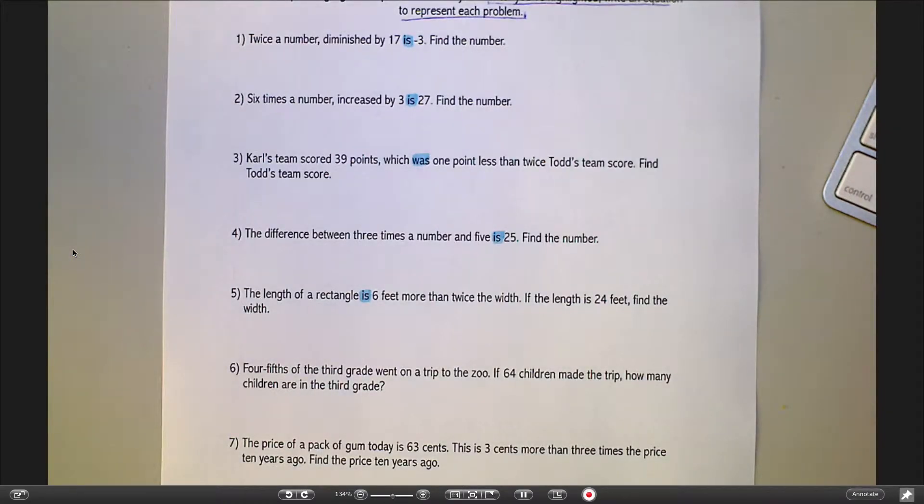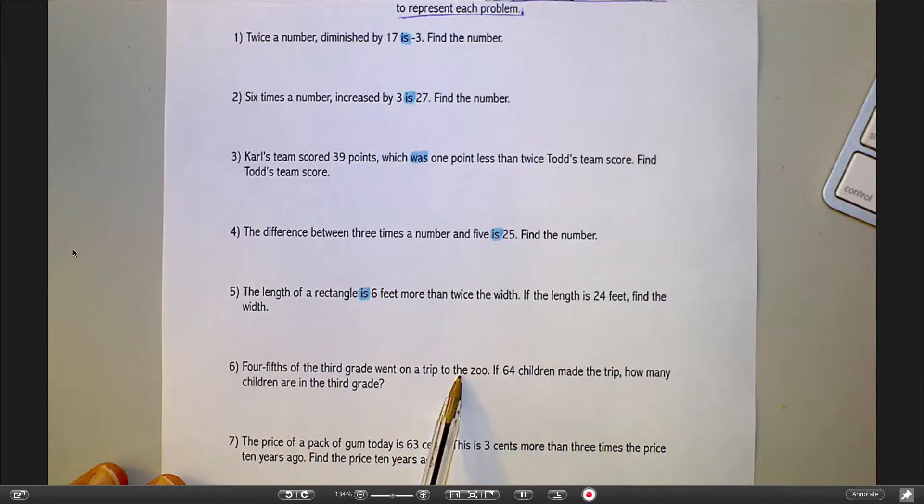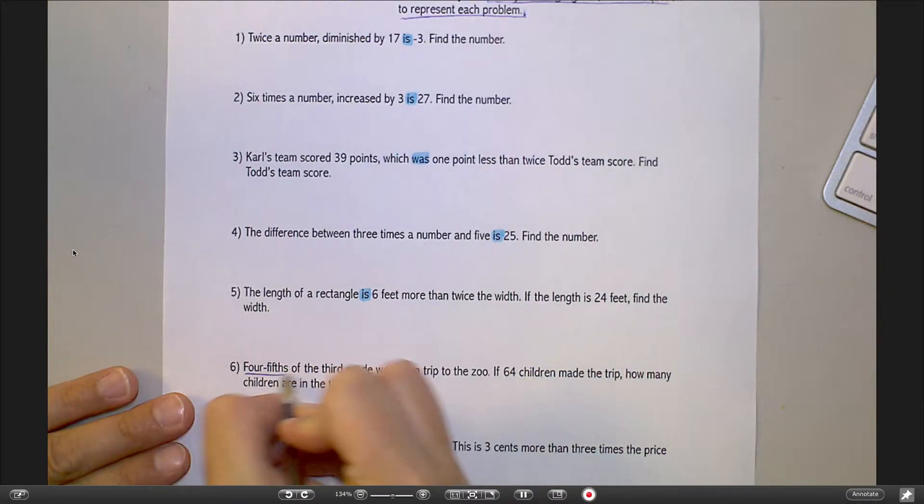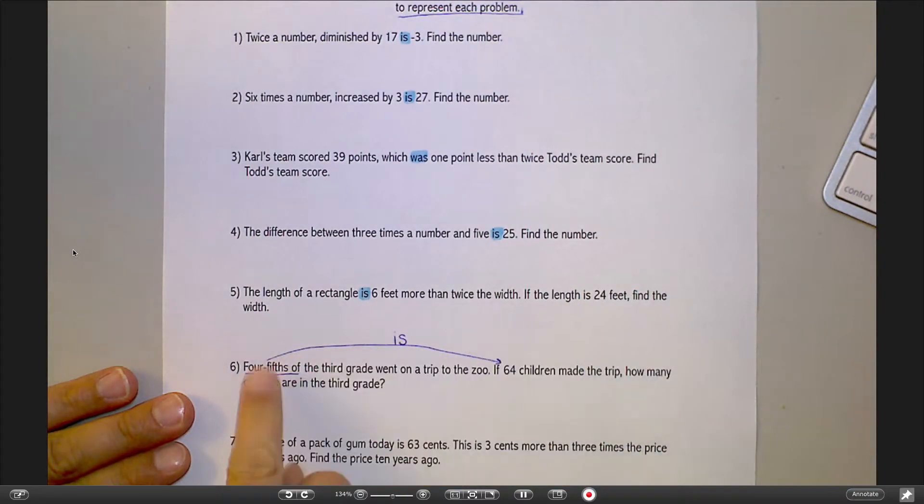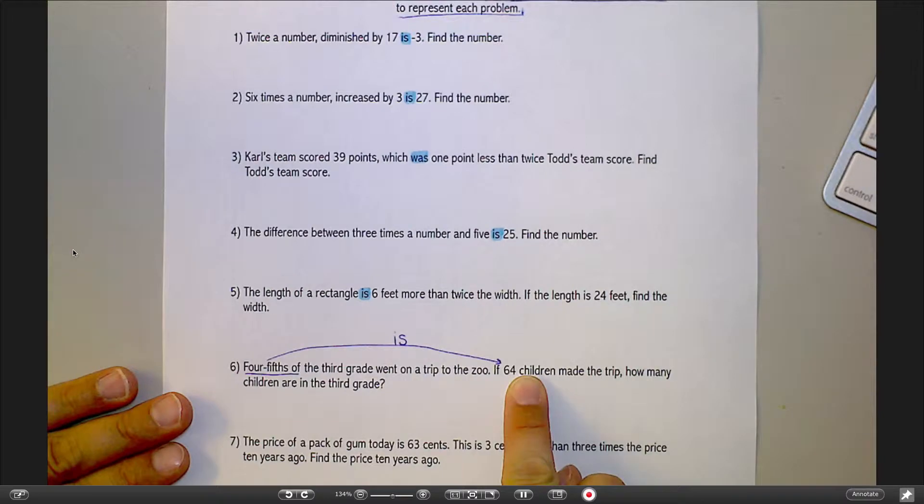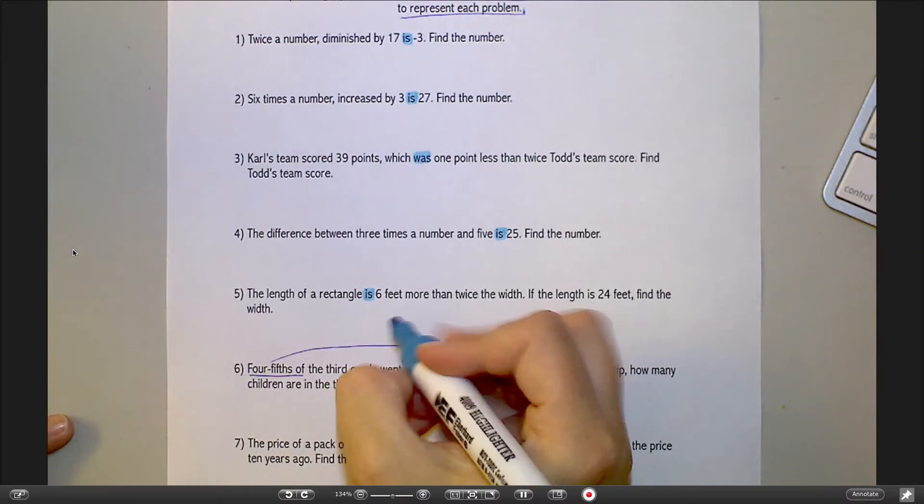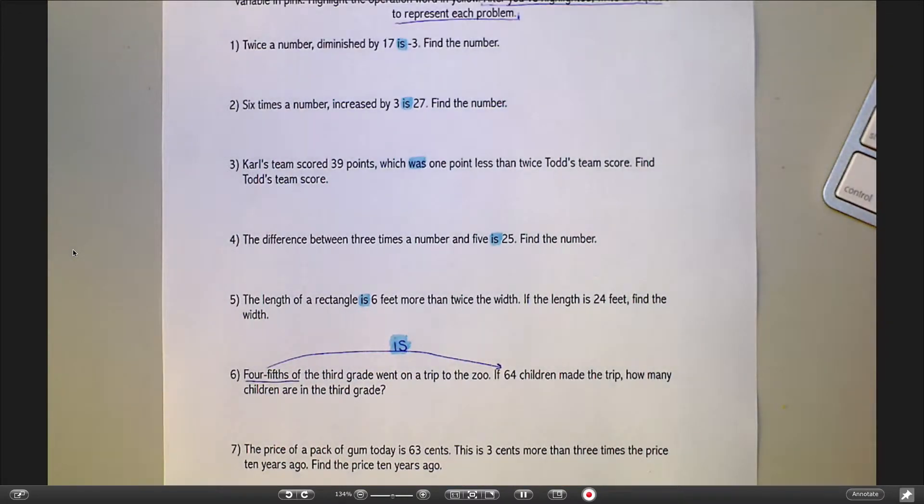This one is a tricky one. 4 fifths of the third grade went on a trip to the zoo. If 64 children made the trip, how many children are in the third grade? That word is does not show up in any of its forms in this problem. So this one is sort of implied. It says 4 fifths of the third grade went on a trip, and 64 children went on the trip. So this 4 fifths is 64 children. The 4 fifths of the third grade is 64 children is what this says, if I were to reword it. So your is in this one is sort of implied. Those ones pop up every once in a while, but I'm telling you, 90% of the time you can find that word right inside your problem.